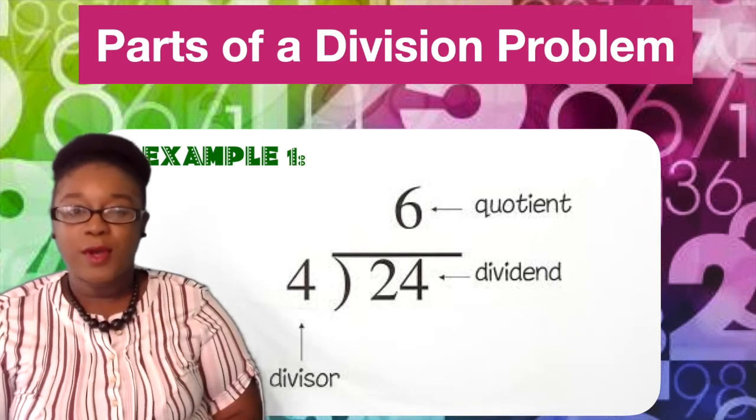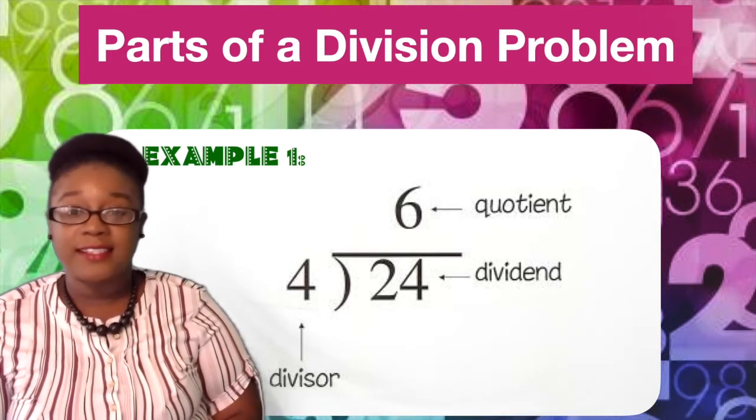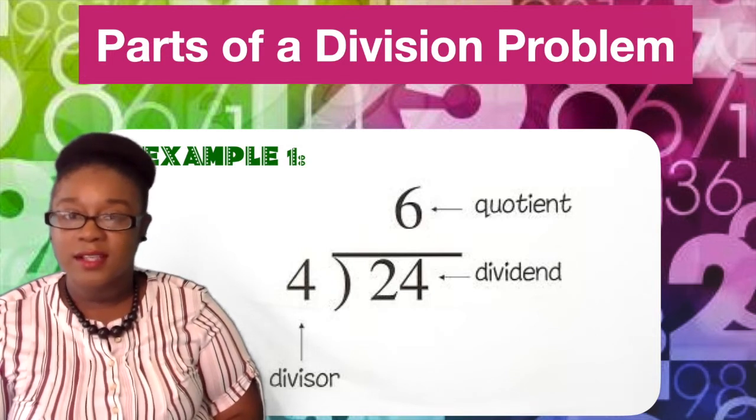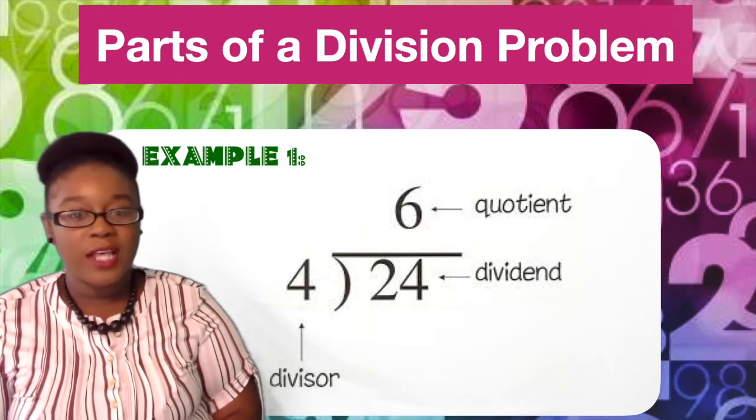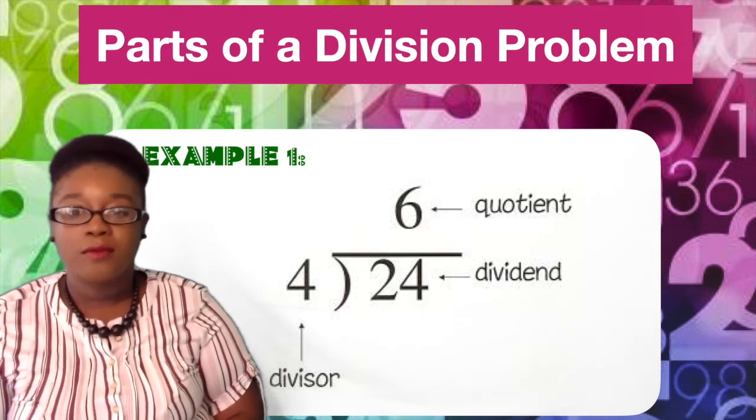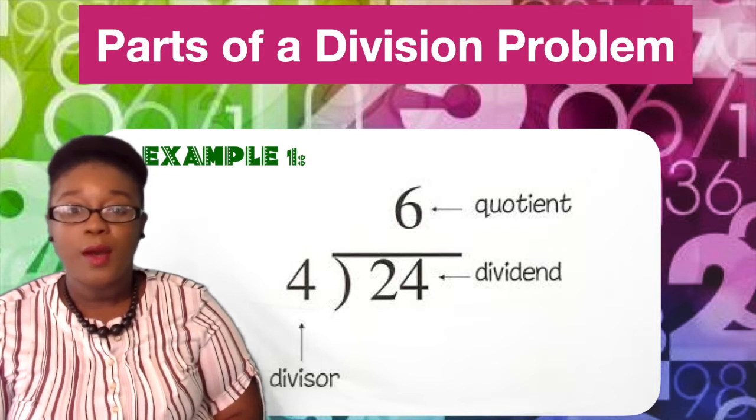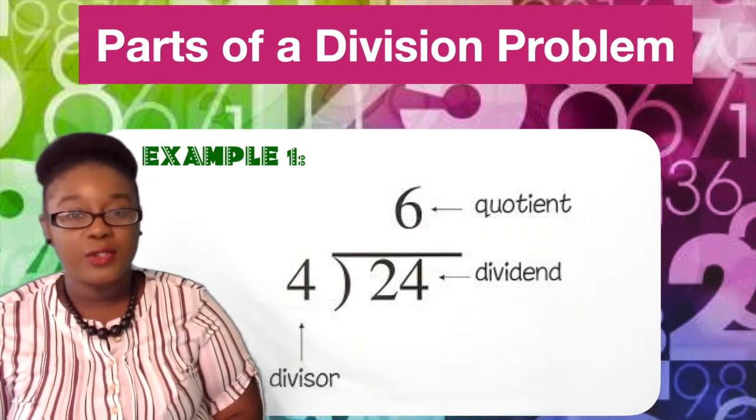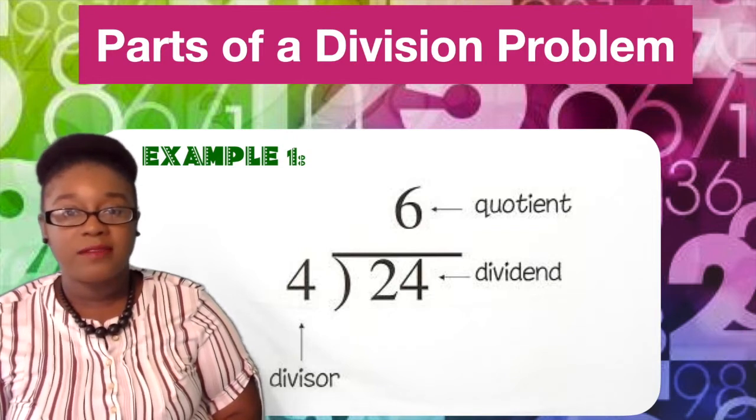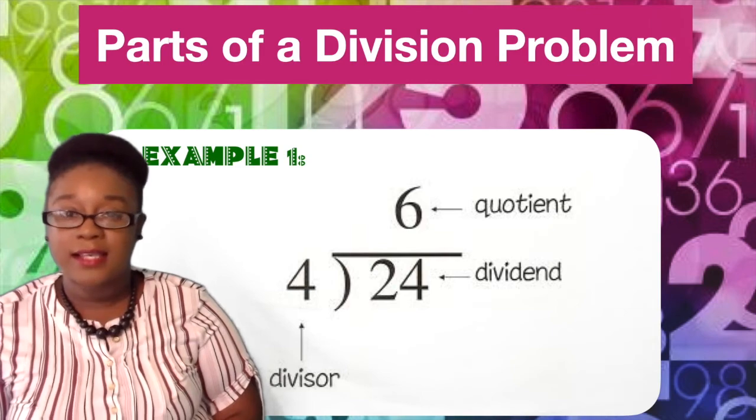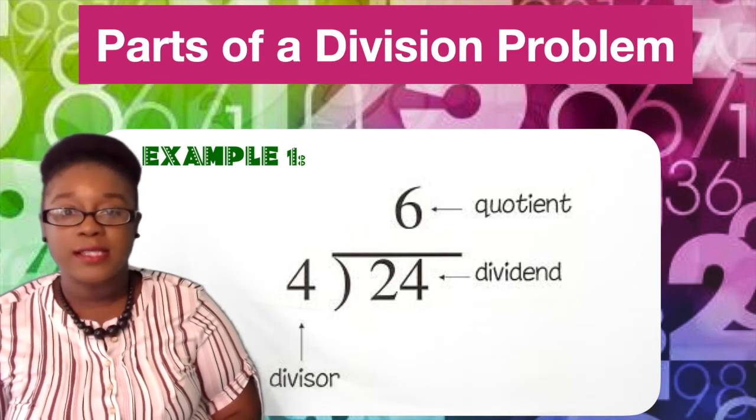In this example, you see the division parts identified after the equation has already been solved. This example shows that four can divide evenly into 24, resulting with six in each group. 24 is our dividend, the number we are dividing into. Four is our divisor, the number we are dividing by. And six is our quotient, the result obtained.